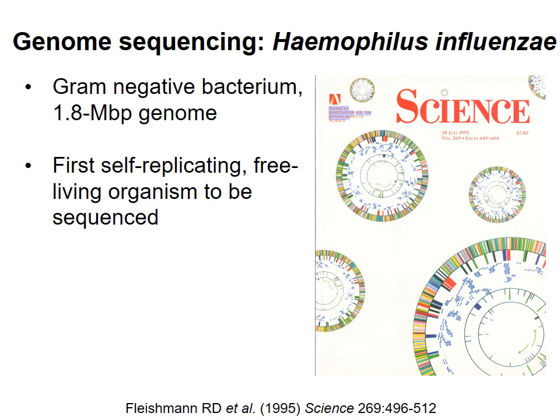In this series of videos, I want to go over the strategy used to sequence the genome of the bacterium Haemophilus influenzae, which was the first genome of an independent organism to be sequenced. Note that despite its name, this organism does not cause influenza, though it is a human pathogen. The entire 1.8 million base pair genome sequence was obtained using the Sanger sequencing method and was published in 1995.